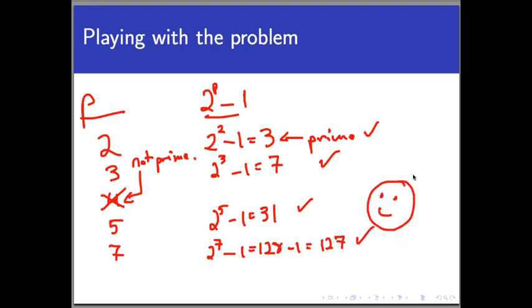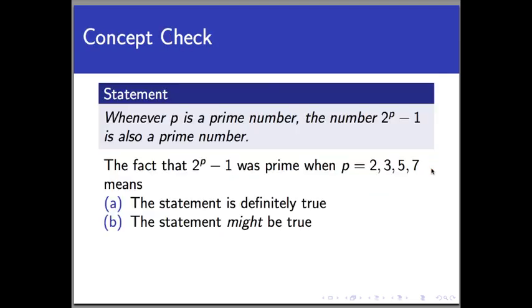Let's take a quick concept check here to see what you think it means. This is a very simple concept check, but you have to think about the answer here. So the fact that the 2^P statement was true for P equals 2, 3, 5, and 7 means what? That the statement is definitely true, or that the statement might be true, but we don't know yet. Now think about that question and pause the video and unpause it when you think you got the answer.